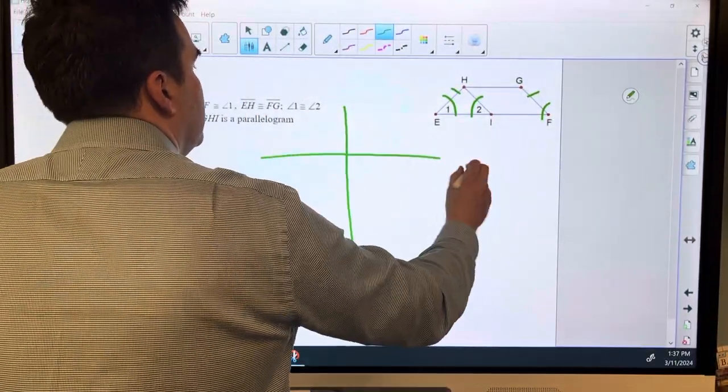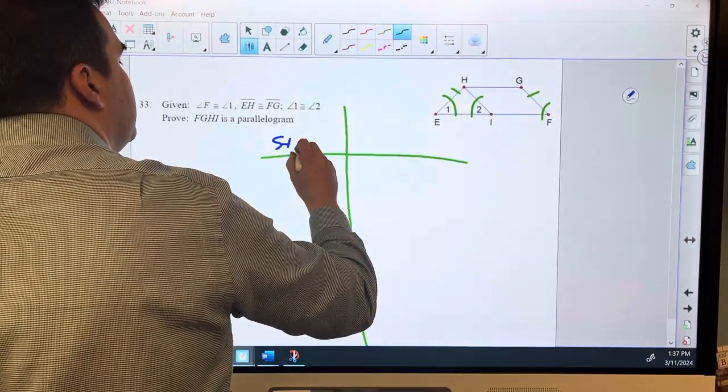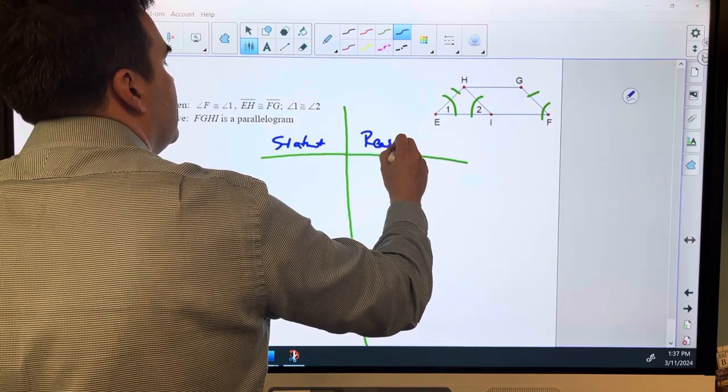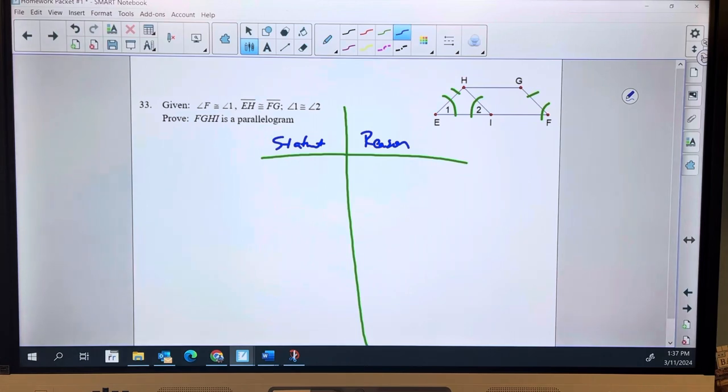All right. We've got our statement and we've got our reason. Now, organizing this in my head, I'm going to start with congruency. I think it's the one that jumps out the most. Then build in that parallel and then once I've got parallel and congruent, then I've got a parallelogram. All right.